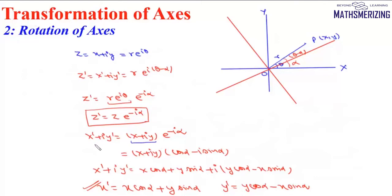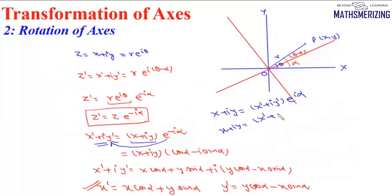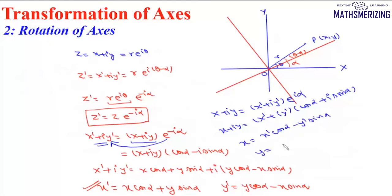If we need to write X plus iota Y in terms of X dash and Y dash, we can write X plus iota Y equals (X dash plus iota Y dash) times e to the power iota alpha. Expanding: (X dash plus iota Y dash)(cos alpha plus iota sin alpha). Comparing real parts gives X equals X dash cos alpha minus Y dash sin alpha, and Y equals Y dash cos alpha plus X dash sin alpha. This is our second method to derive the rotation of axes formulas.